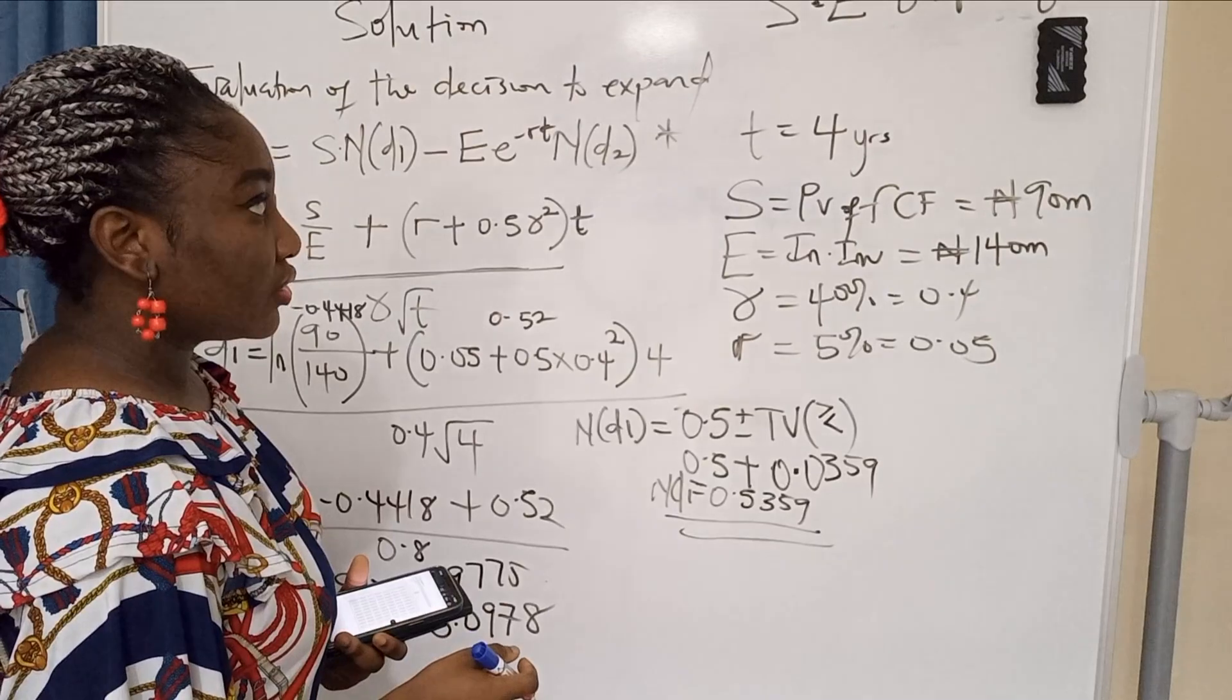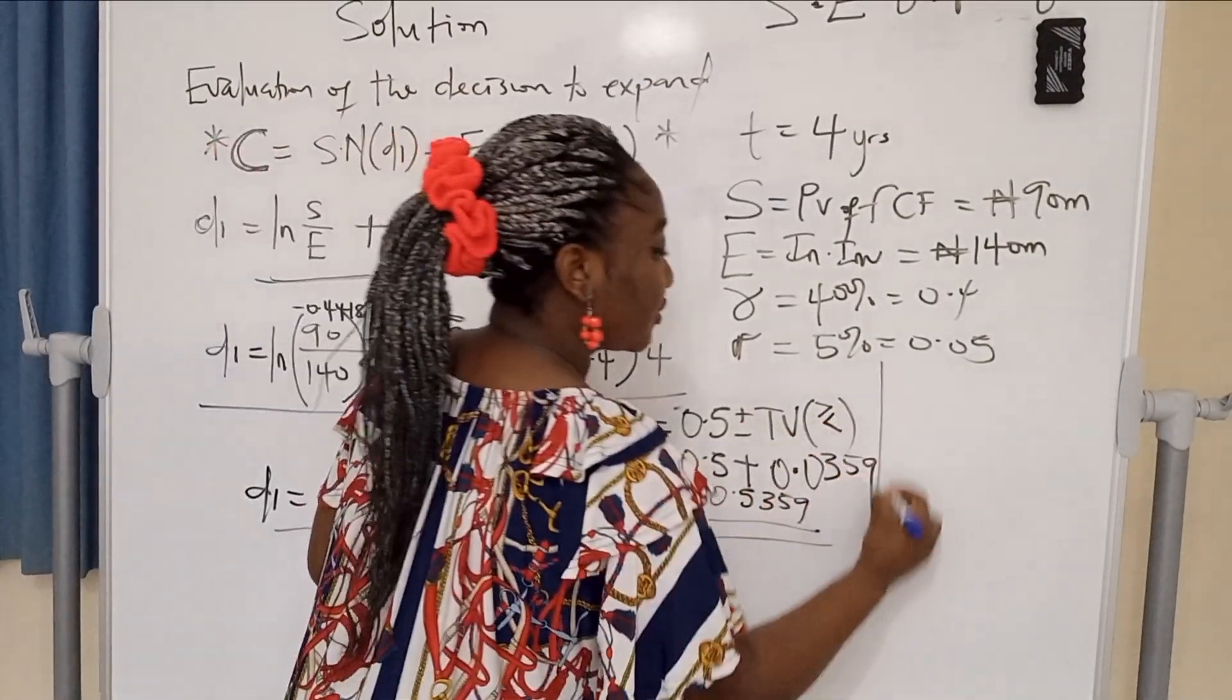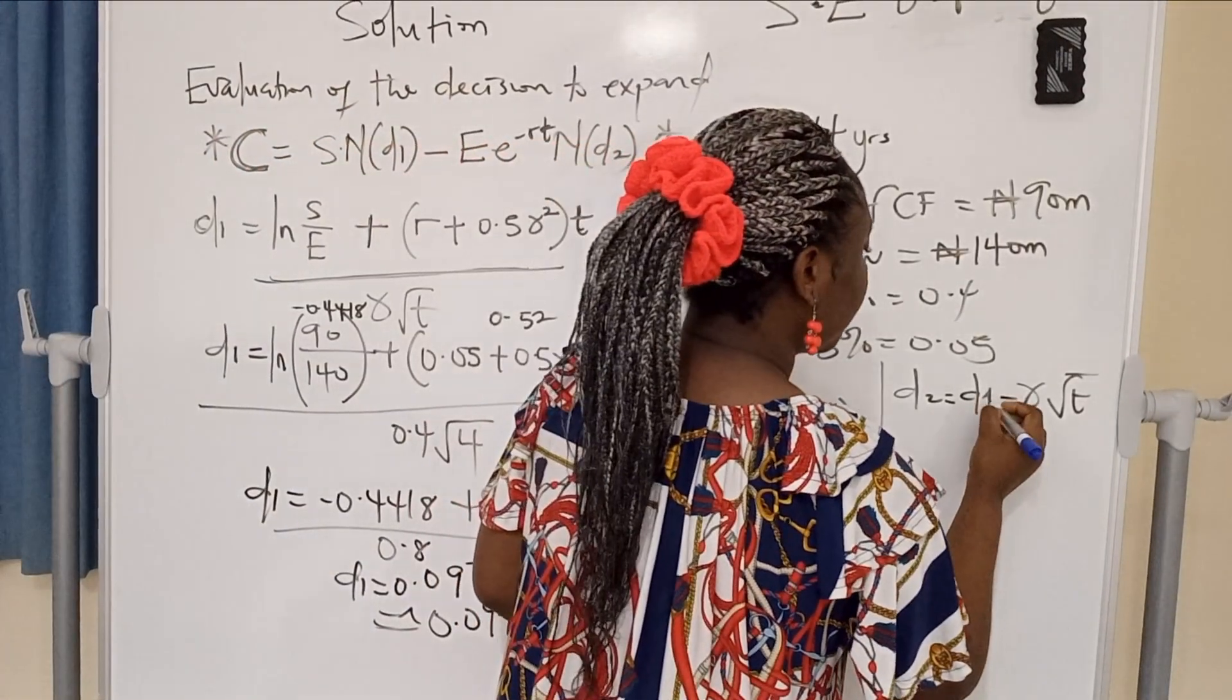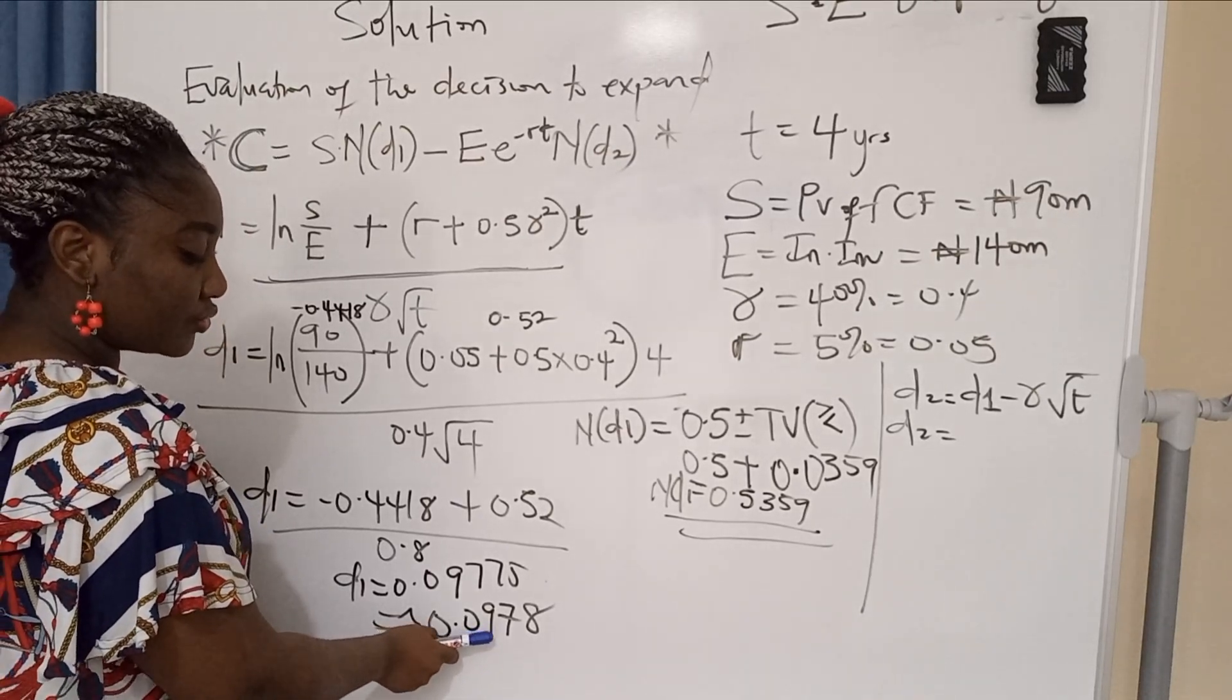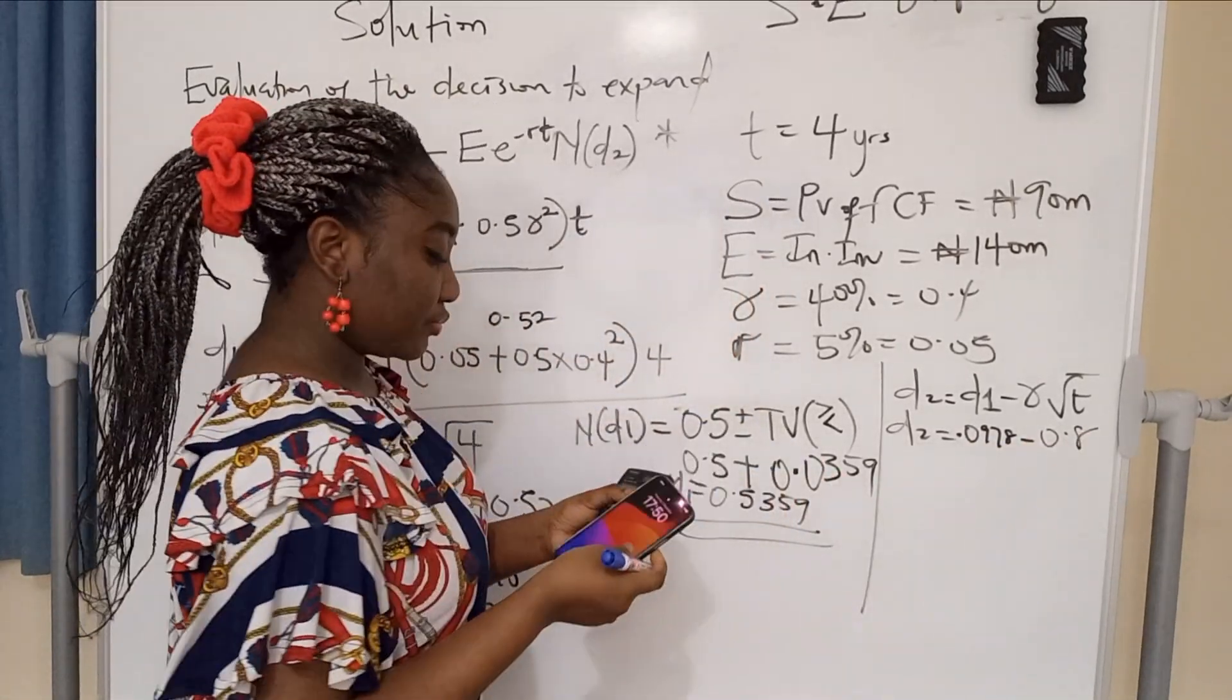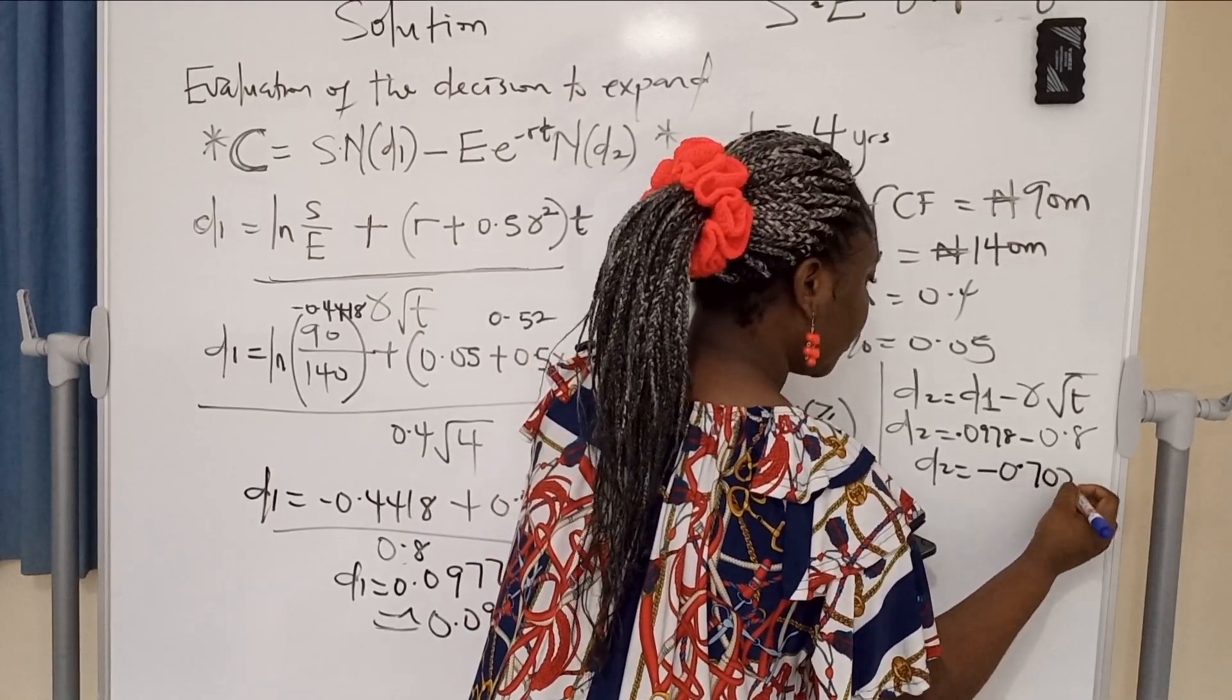Now that we have N(d1), this formula is becoming complete already. We are looking for our N(d2) because we are trying to get C. C is the value of the option - it's how you know if something in a project is worth it. Since we've gotten N(d1), let's get N(d2). You need to get D2 first. Your D2 equals D1 minus standard deviation root T. D2 equals 0.0978 minus 0.8. This one is a negative. D2 equals minus 0.7022.